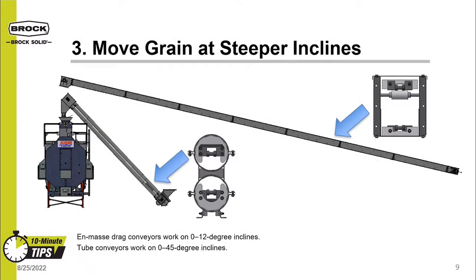The third reason to switch to a tube conveyor is that they can operate at steeper inclines than a traditional drag conveyor. For this comparison, we will look at the scenario of filling a low-profile dryer. A typical drag conveyor is limited to approximately a 12-degree incline, meaning it needs to be around 75 feet long to fill the dryer. But a tube conveyor can be inclined up to 45 degrees — making it 50 feet shorter. The steeper angle allows the tube conveyor inlet to be located much closer to the dryer, allowing the area around the dryer to be better used for other handling or storage needs.